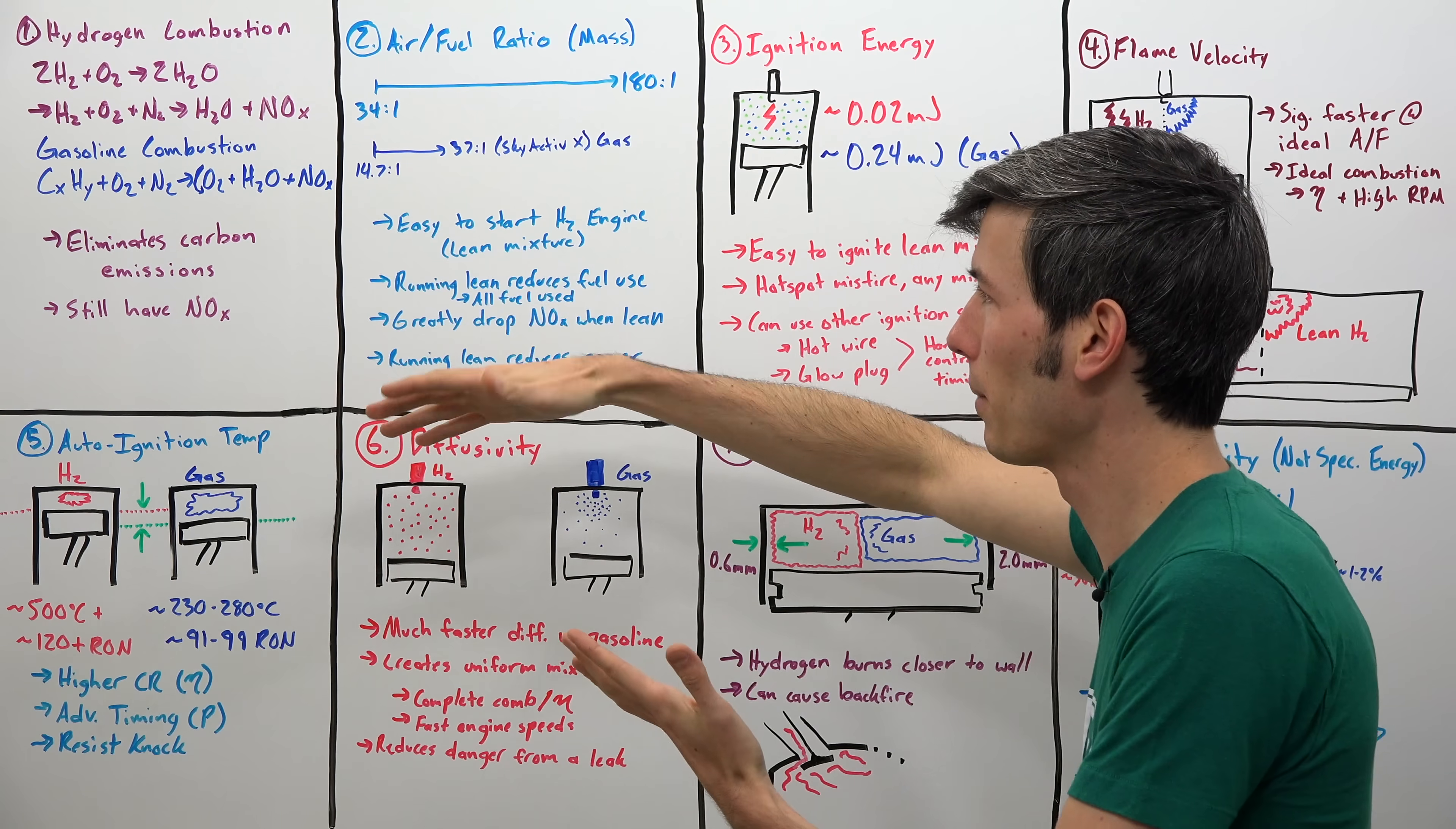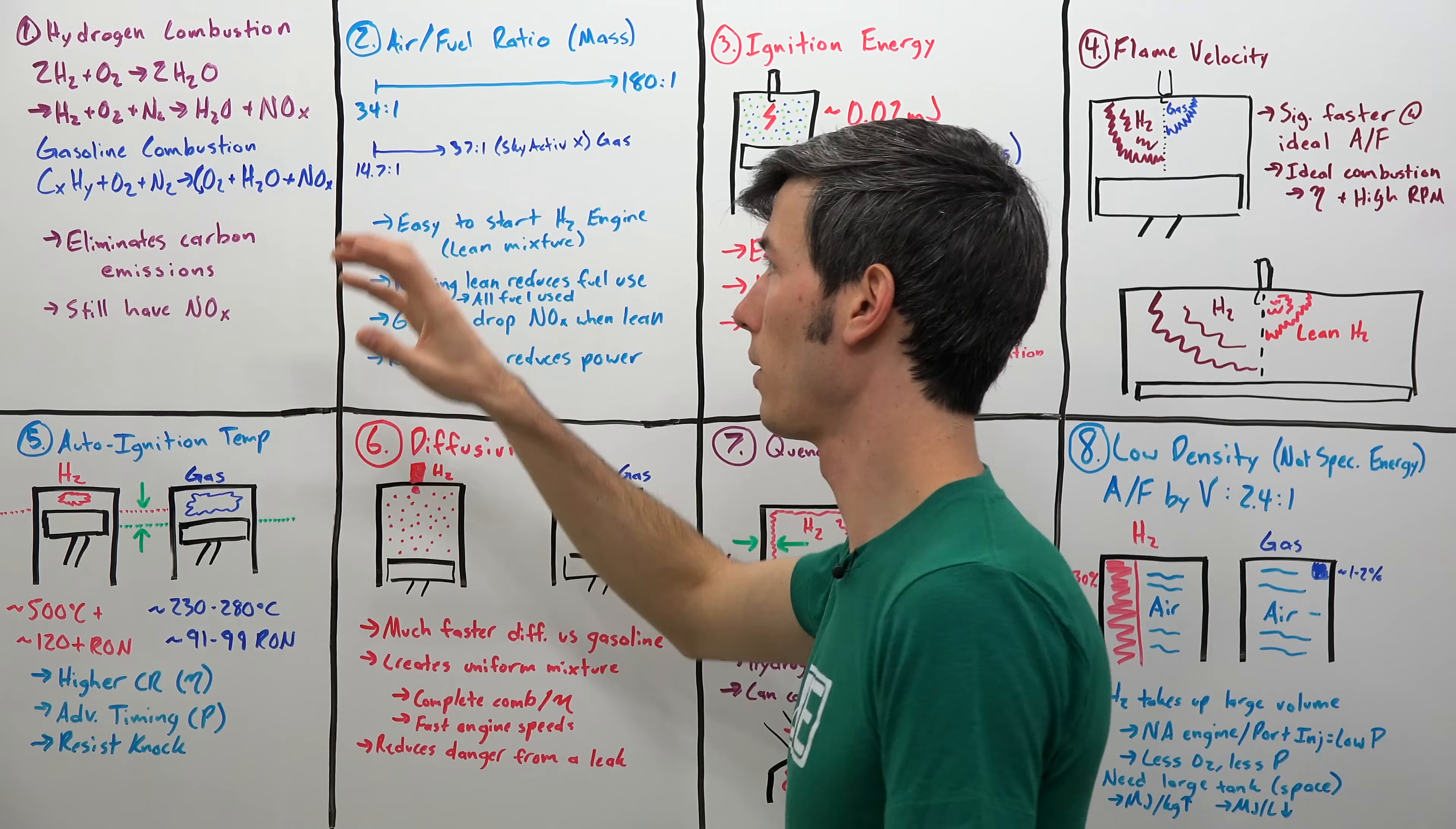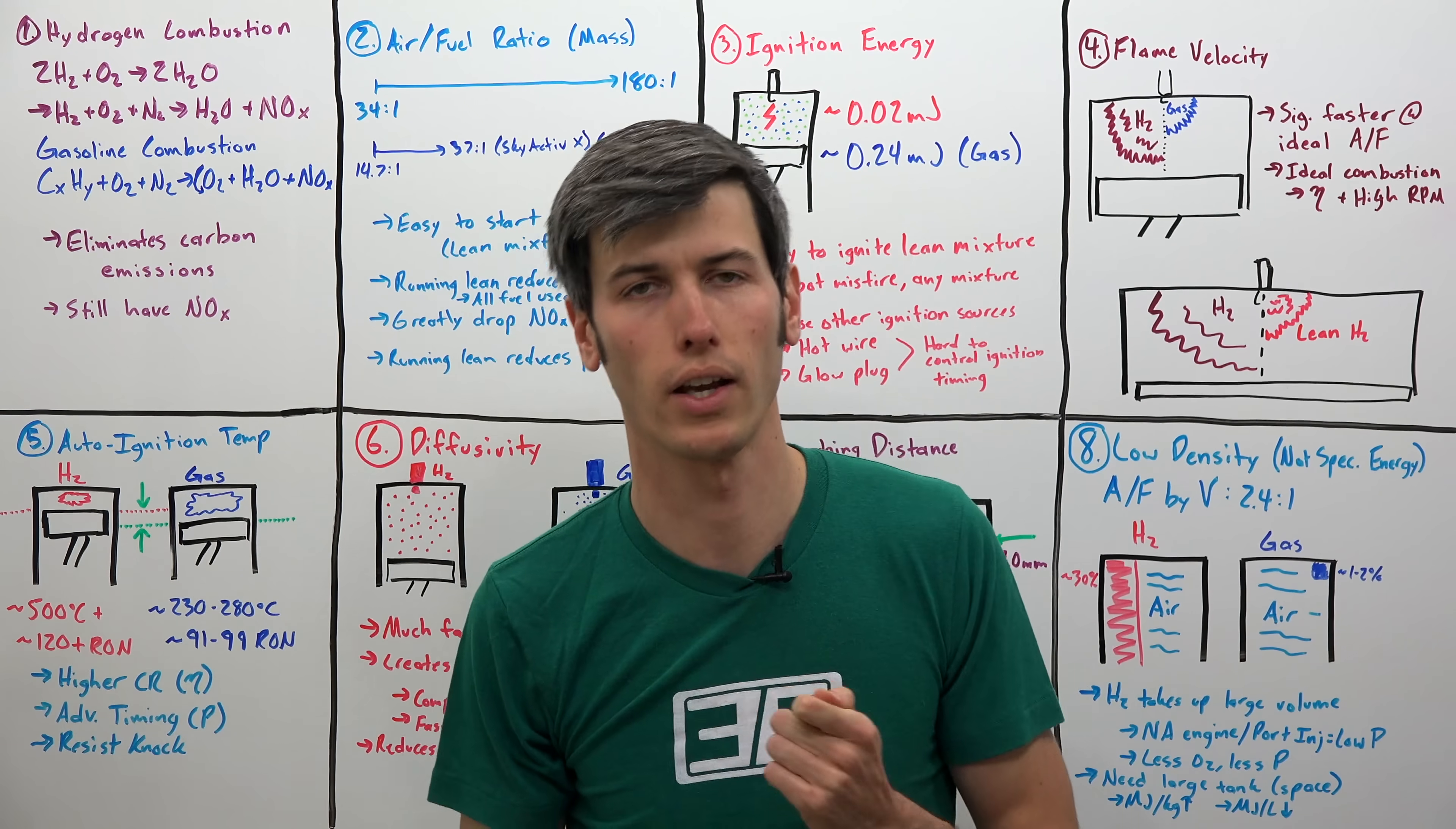So on the other hand, gasoline combustion engines, you start with a hydrocarbon. So C number, H number. For like octane, it may be C8, H18. You're going to add to that oxygen and nitrogen, and then your combustion byproducts are going to be CO2, H2O, and your nitrogen oxides. So the benefit of the hydrogen engine here is that we are eliminating those carbon emissions. So we're not taking a carbon from underneath the ground, putting it into an engine, and then dispersing it into the air. There's no carbon introduced in this equation. Unfortunately, you do still have those nitrogen oxide emissions.